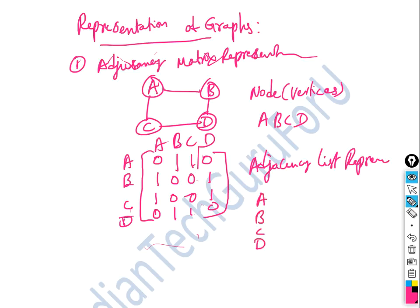For vertices A, B, C, D: A is adjacent to B and C. B is adjacent to A and D. C is adjacent to A and D. D is adjacent to B and C. This is the adjacency list representation.